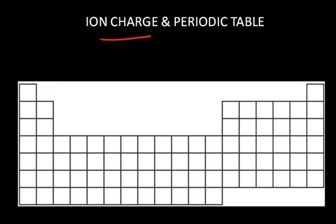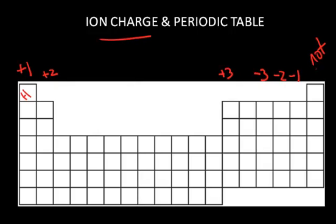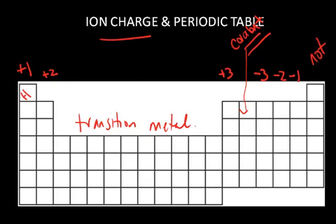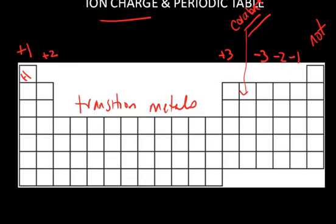You can predict the charge of the ion based on its position on the periodic table. Group 1 elements tend to form a plus 1 ion, group 2 a plus 2, and group 3 a plus 3. Group 8 — the noble gases — tends not to form any bonding because it's stable. Group 4 tends not to form ions either, since it's unclear whether to lose or gain four electrons; these elements tend to form covalent compounds. Group 5 tends to gain three electrons for a minus 3 charge, group 6 gains two for minus 2, and group 7 gains one for minus 1. The transition metals do form cations, but predicting their charges is more difficult and not covered here.